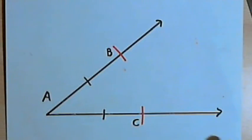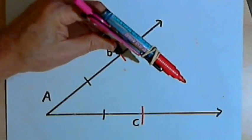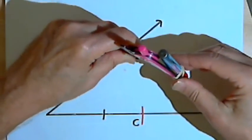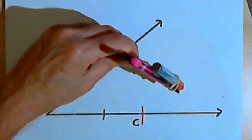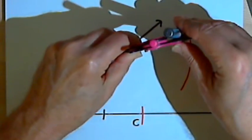Now I'm going to draw two more arcs. I'm going to place my compass point at point B. It doesn't matter if you keep the same compass setting or not. I'm going to draw an arc in between those two rays.